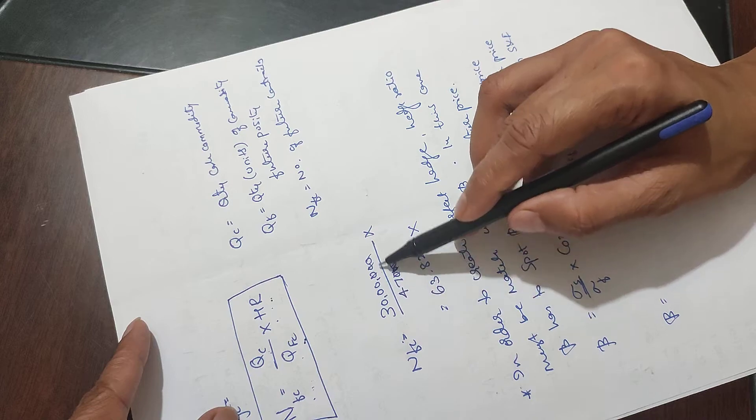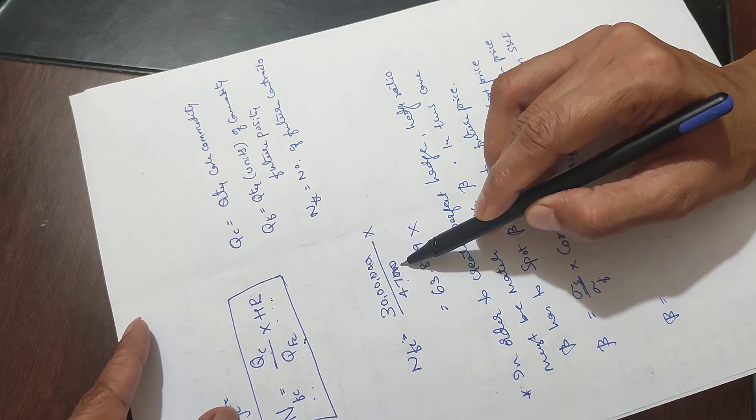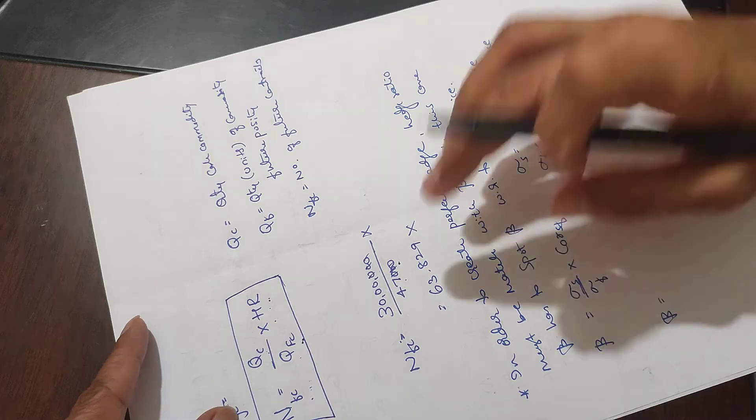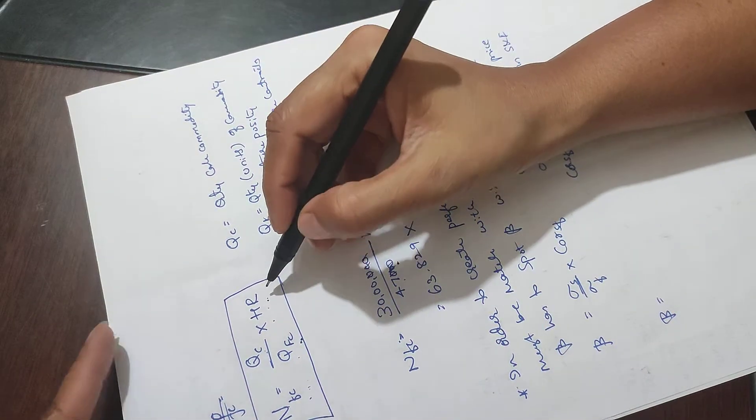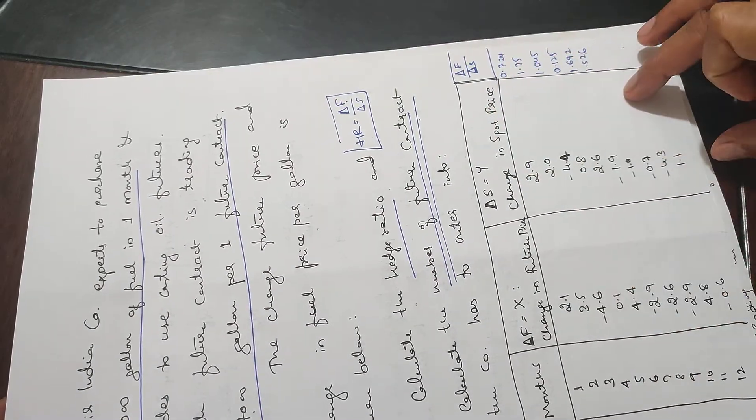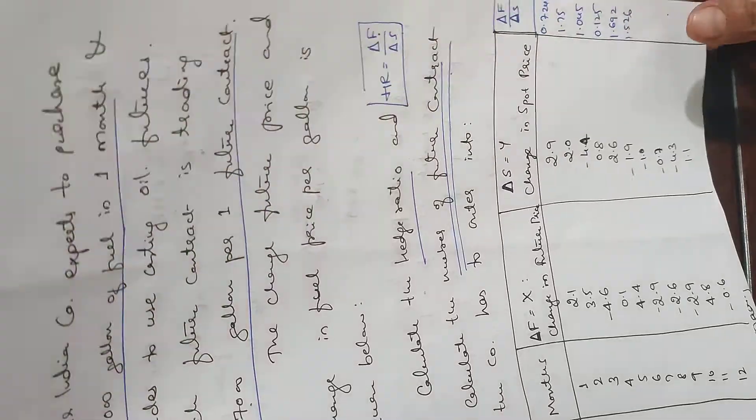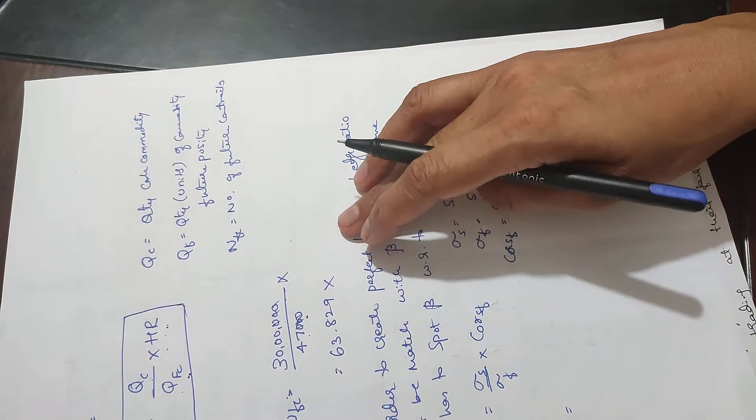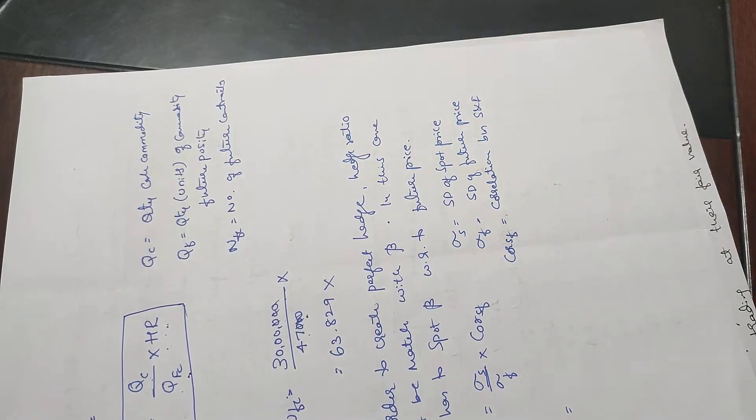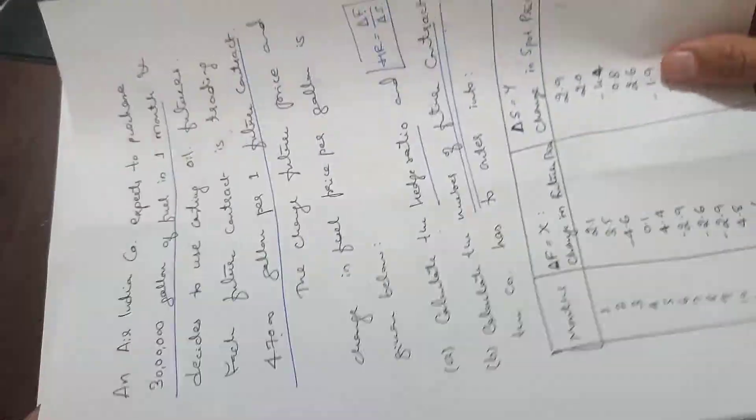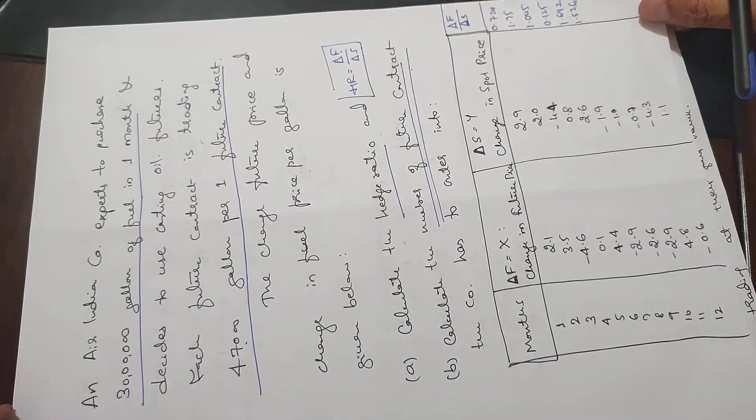You need 30 lakh gallons divided by 47,000 per contract times the hedge ratio. The hedge ratio uses standard deviation to find the answer. If you have questions, please comment below.